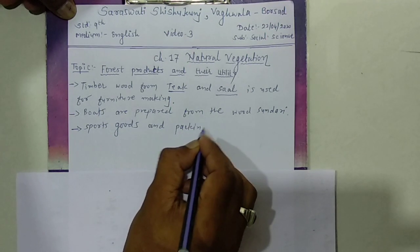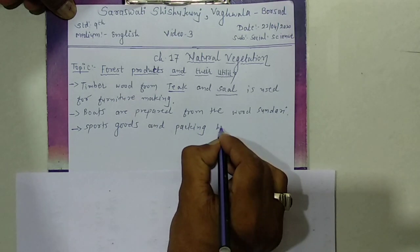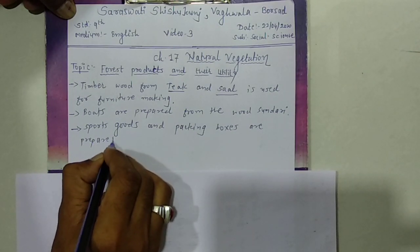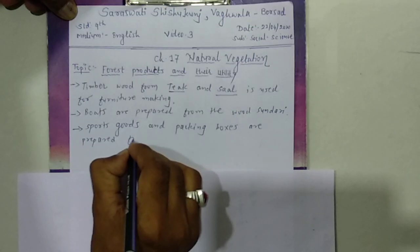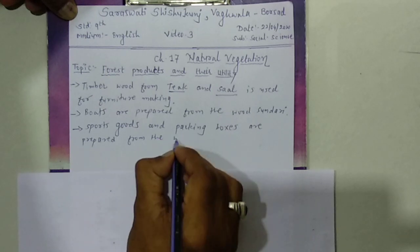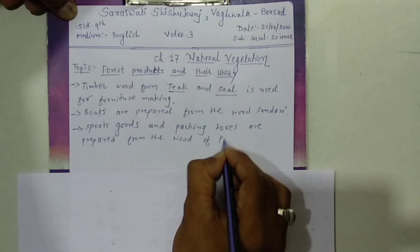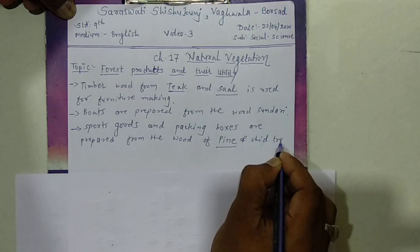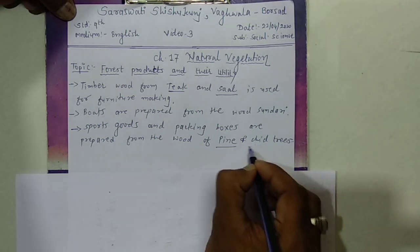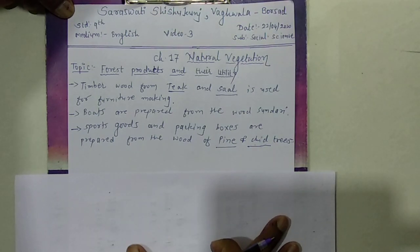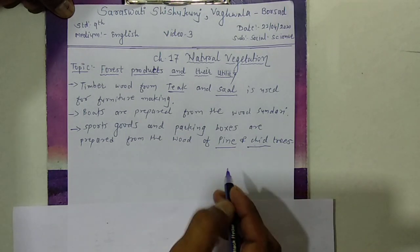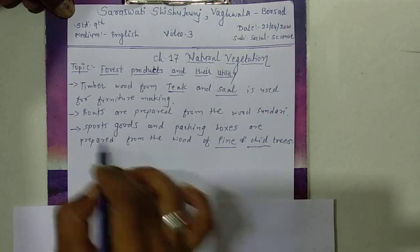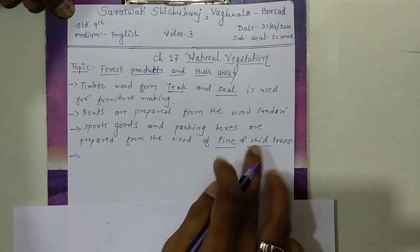Packing boxes and sports goods are prepared from the wood of pine and deodar trees. Pine and deodar trees are not too hard, which is why they are mostly used for packing boxes. Similarly, sports equipment is also not too hard, so these two trees are used for these two particular purposes.